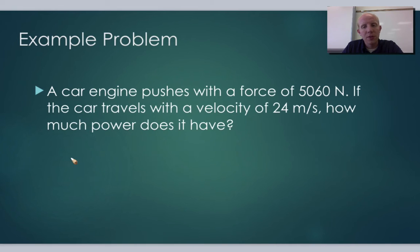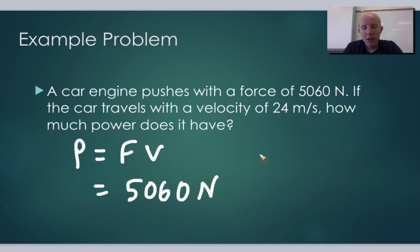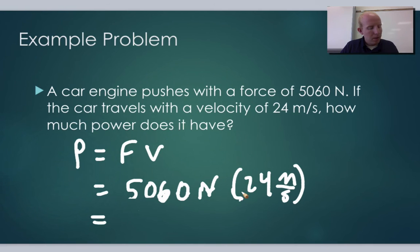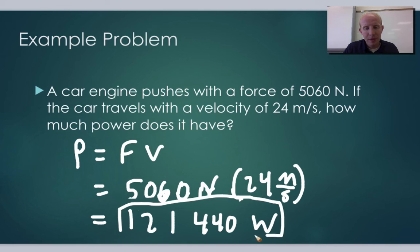A car engine pushes with a force of 5,060 newtons. If the car travels with a velocity of 24 meters per second, how much power does it have? So all we've got to do is say power equals force times velocity. In this case, we know the force was 5,060 newtons. The velocity was 24 meters per second. We times those together and we get that the total power used by the car is 121,440 watts.